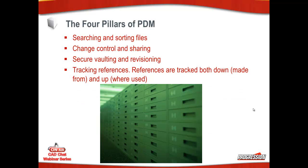The four pillars of a PDM system give you the ability to search and sort files, control change and sharing, secure vaulting and revisioning, and track references. Track references is probably one of the most important ones — it should be able to track references up and down: made-from and where-used. That way you'll know what parts are used to make what drawings, and in an assembly environment, what assembly a part is used in.